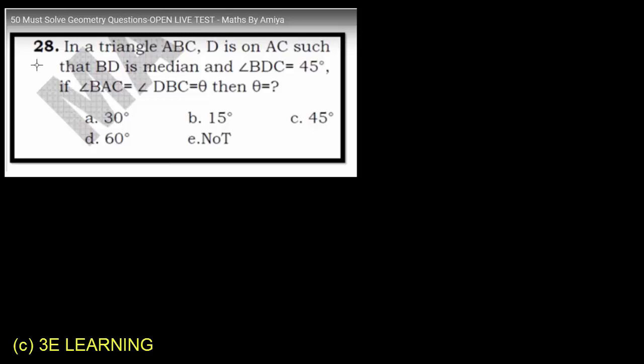This is question number 28 of the 50 MERS solve geometry questions. In triangle ABC, D is on AC such that BD is median and angle BDC is 45 degrees. If angle BAC equals angle DBC equals theta, then we have to find theta. Before solving this question, I will discuss two concepts: the sine formula and the similarity concept.